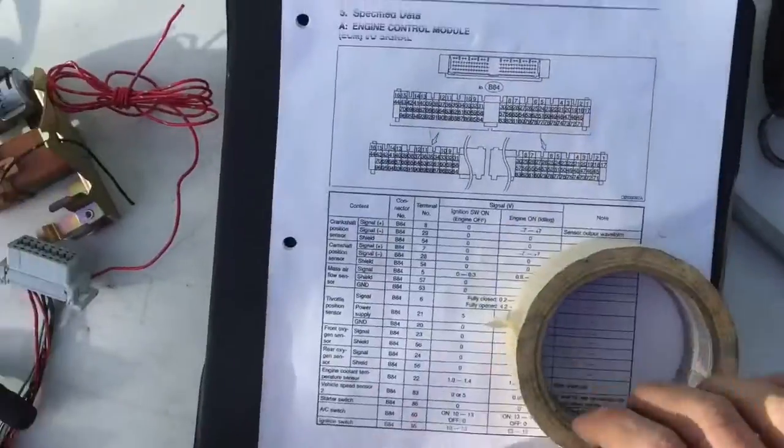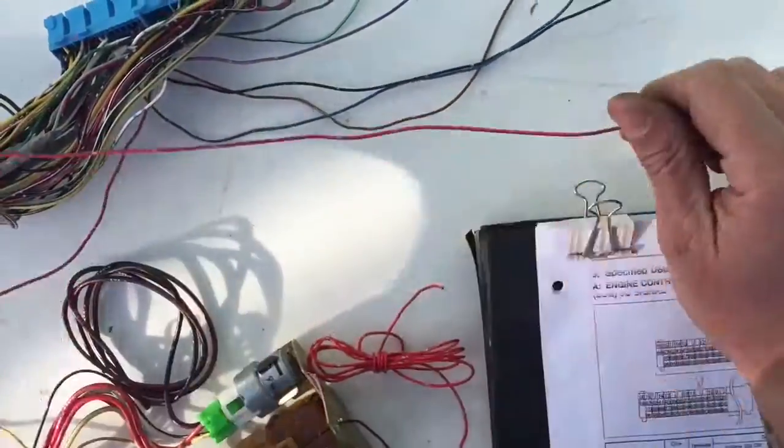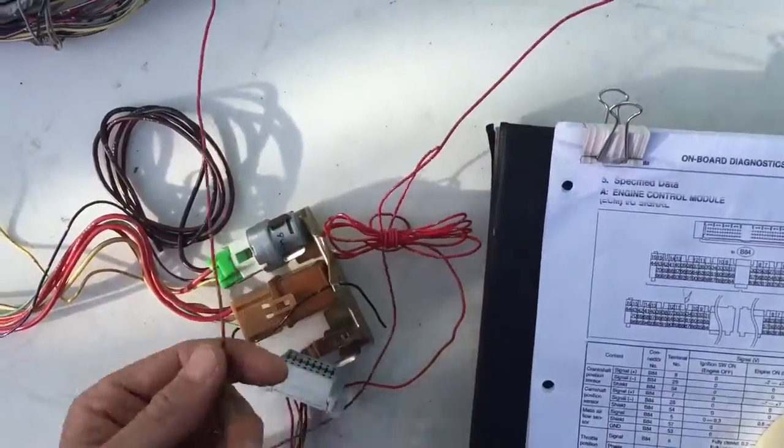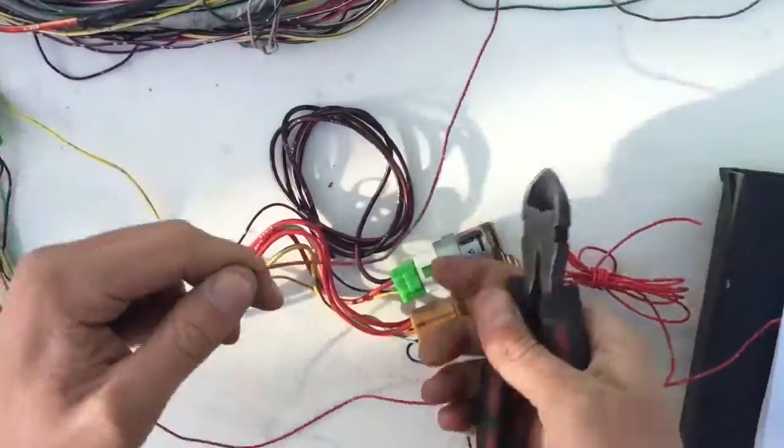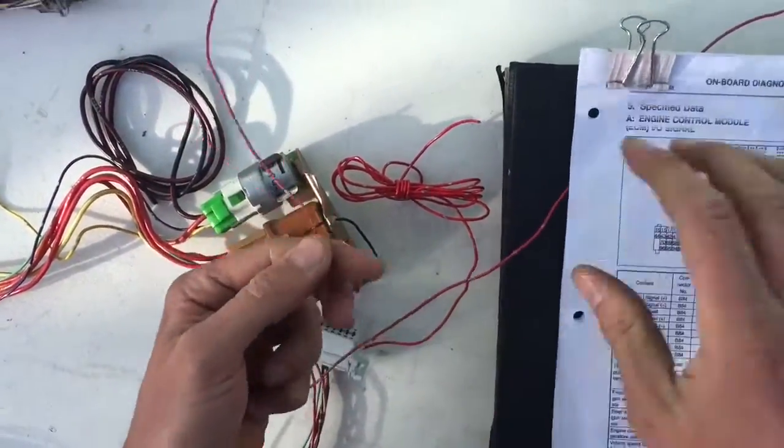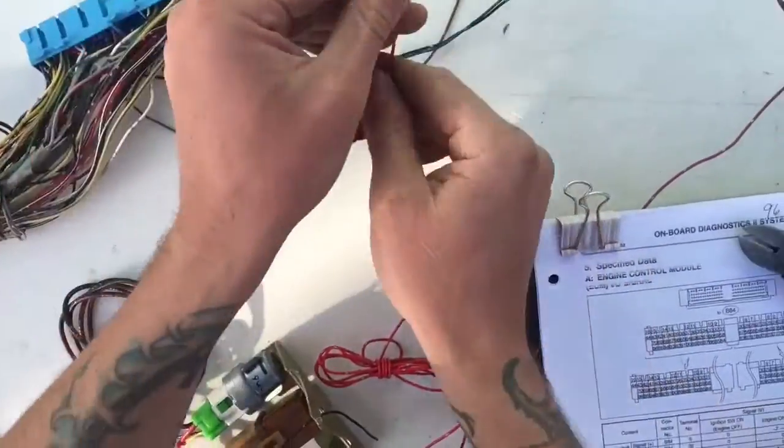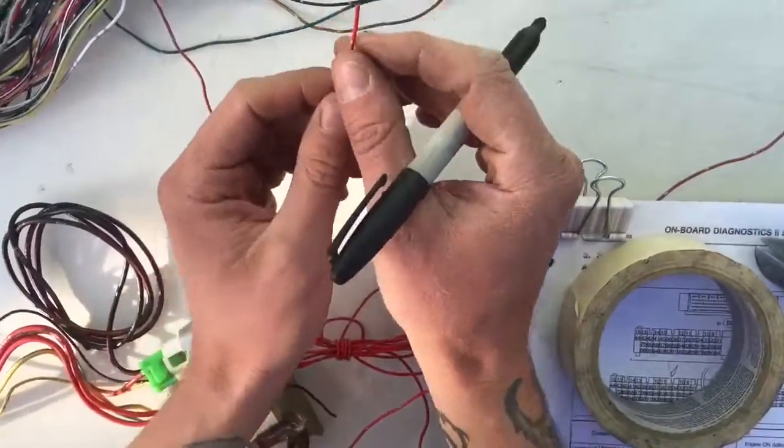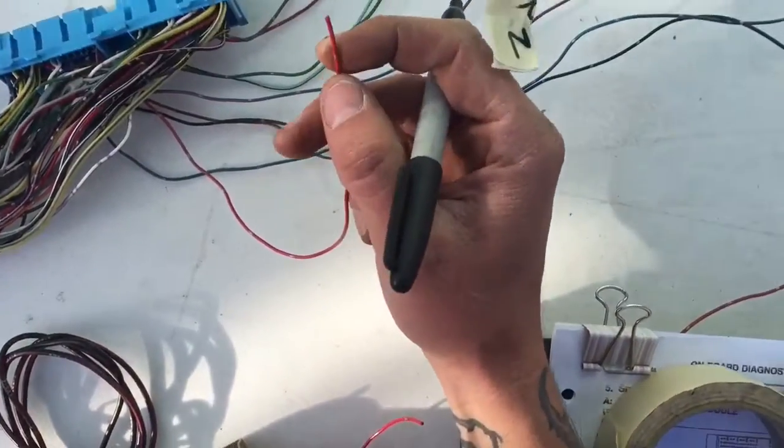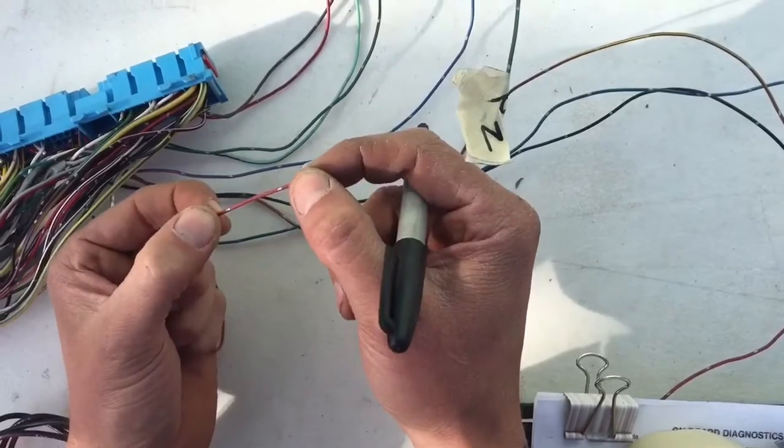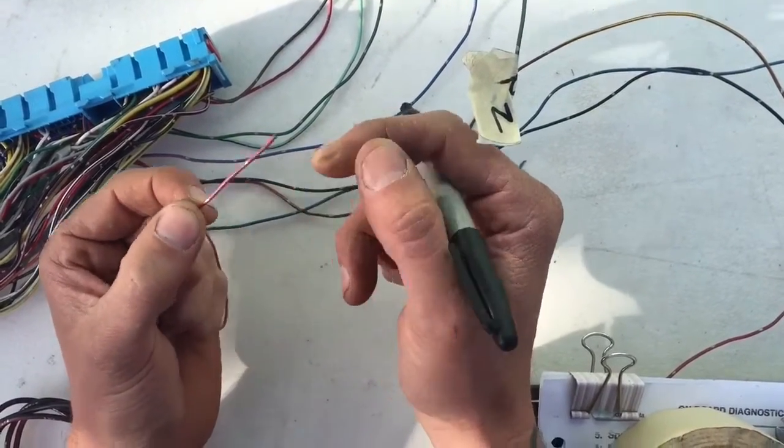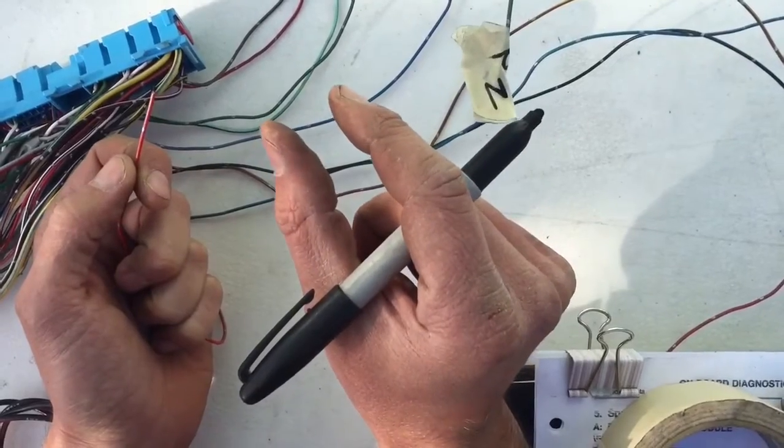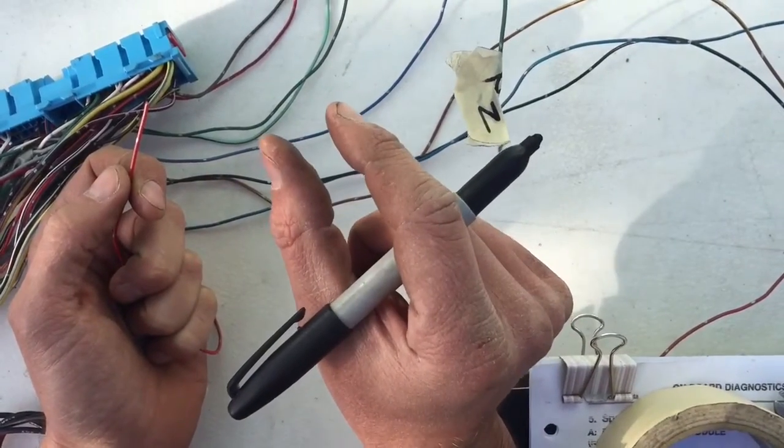I actually prefer to run OBD gauges versus having lights annoy me because you're going to have engine codes most of the time. The way that the malfunction indicator lamp works is the ECU provides a ground for a lamp, so you can get a little LED or something, a 12-volt LED from Radio Shack or something.